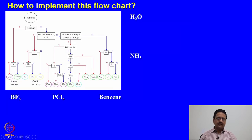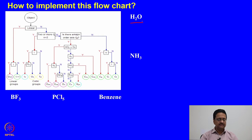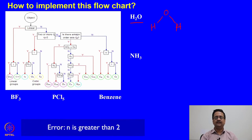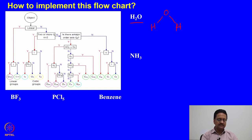I have taken those molecules for which we have already determined the symmetry elements in the previous two classes. From our previous knowledge, if we take the molecule water: the first question asked is — is it a linear molecule? The answer is no, water is not a linear molecule; water is a bent molecule. Next question: does it have 2 or more Cn where n is greater than 3? Clearly water does not have C3, C4, and so on — it only has a C2. So the answer is no.